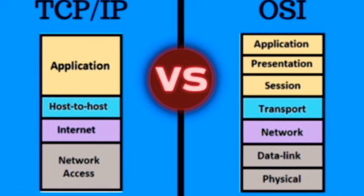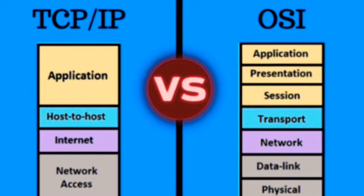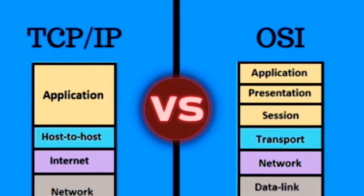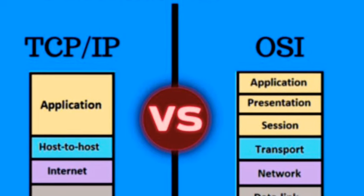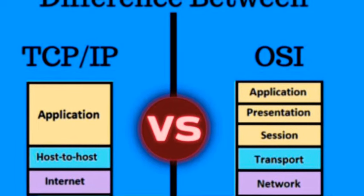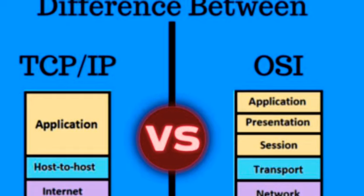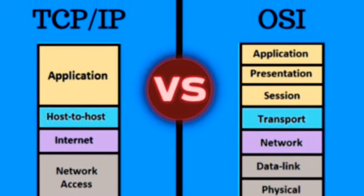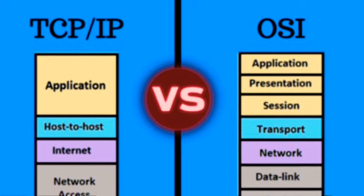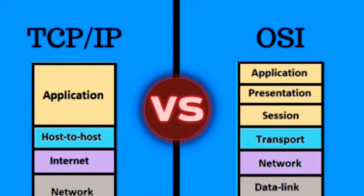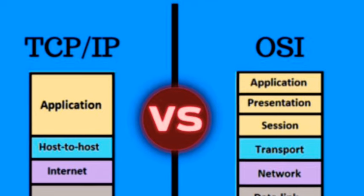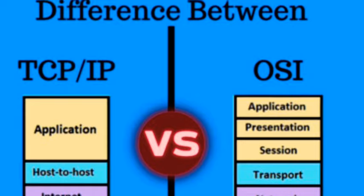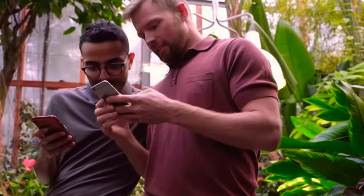Now, where are these models implemented? The TCP/IP model is the backbone of internet communications — it's like the air we breathe in the digital world. On the other hand, the OSI model is often used in teaching and documentation, providing a comprehensive framework for understanding network interactions. In the world of computer communication, both the TCP/IP and OSI models play vital roles, and understanding them helps us appreciate the complex processes that enable our daily internet usage.